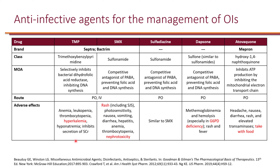The adverse profile of Trimethoprim-sulfamethoxazole includes effects from both components. The trimethoprim component can lead to anemia, leukopenia, thrombocytopenia, hyperkalemia, and hyponatremia. Trimethoprim is also available as a standalone drug, though it is more commonly used in combination.